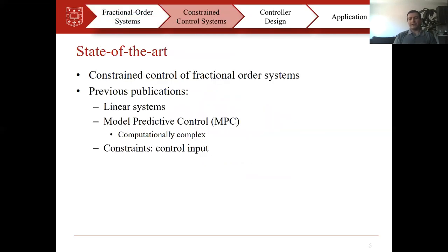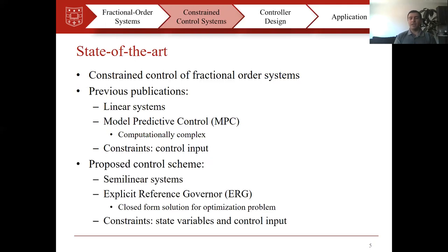If we look at the literature, the presented works are mainly on linear systems and the authors are usually using model predictive control to enforce constraints. The constraints considered are usually constraints on control input, like saturation. In this presentation we will propose a new scheme — the explicit reference governor — which is a new version of the reference governor framework. We will apply this method on semi-linear systems and by using this method we can enforce constraints on state variables and control input, or any combination.